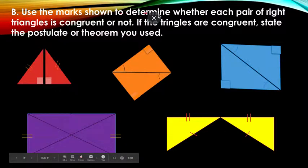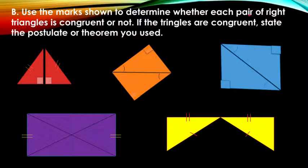Use the marks shown to determine whether each pair of right triangles is congruent or not. If the triangles are congruent, state the postulate or theorem you used. As you can see, on the hypotenuse is our mark of congruence. But there's also a reflexive side. So we have HL congruence because the hypotenuse and the other one is the leg.